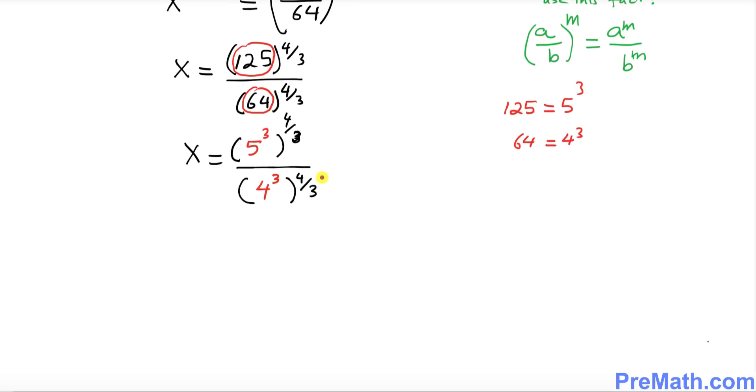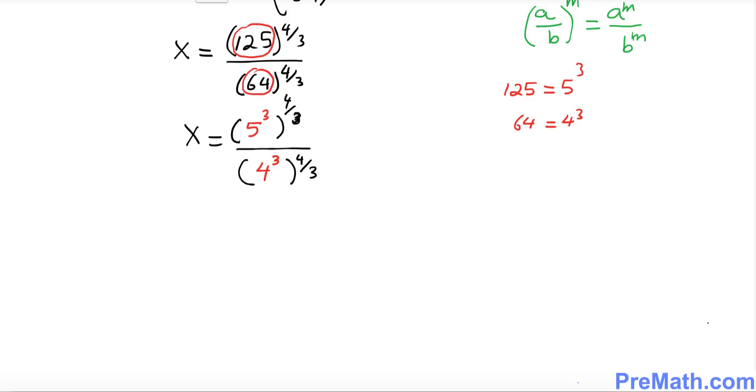Now we're going to go ahead and simplify this. What we're going to do is we have two exponents. Whenever you have two exponents we can multiply them out. We used that fact just a few minutes ago. And likewise in this one as well. So I can write x equal to 5 power 3 times 4 over 3 divided by 4 power 3 times 4 over 3.